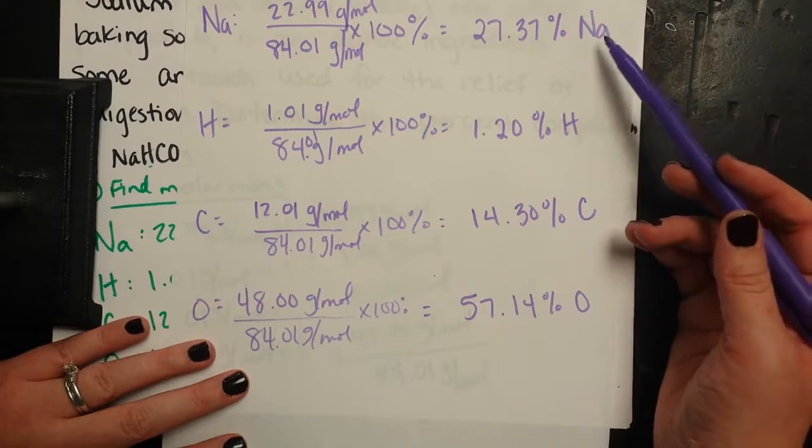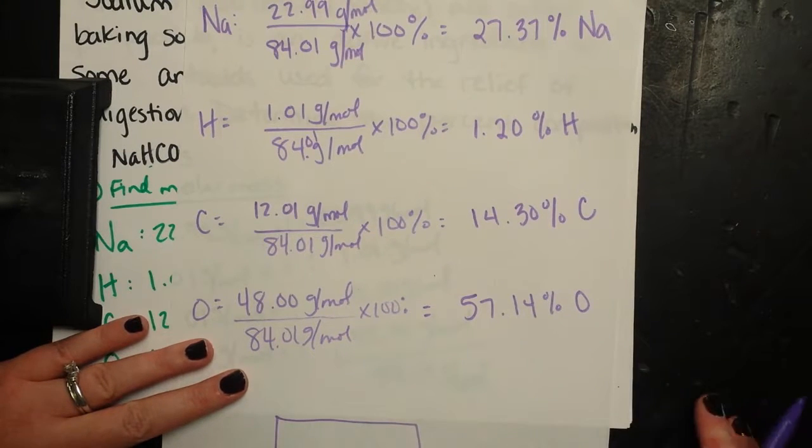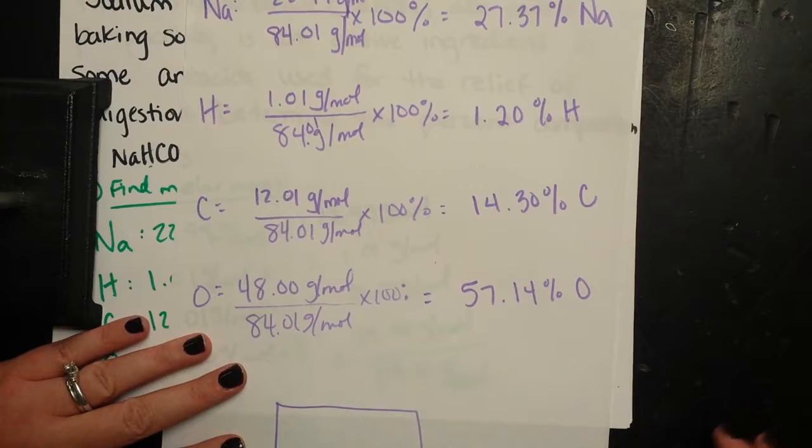And what I like to do to check is to make sure that my percentages add up to 100 or roughly. So you might sometimes get 99.99 or 100.01 or whatever.